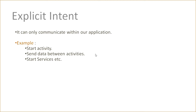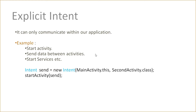We will discuss what services are later. Basically, to use explicit intent in Android, we need to create an object of Intent. After creating the object of an Intent, we need to pass two parameters: the first parameter is the source activity and the second parameter is the destination activity. We will discuss this later in our next video tutorial. After calling start activity and passing the intent, it will start an activity. That is the basic explicit intent example.